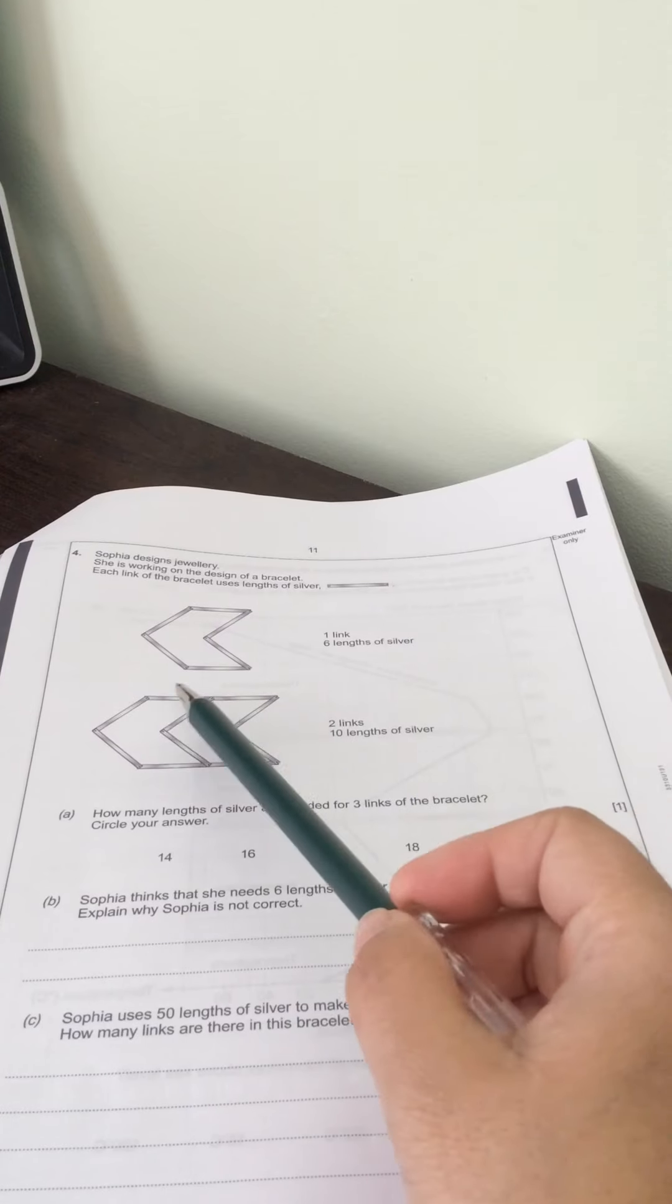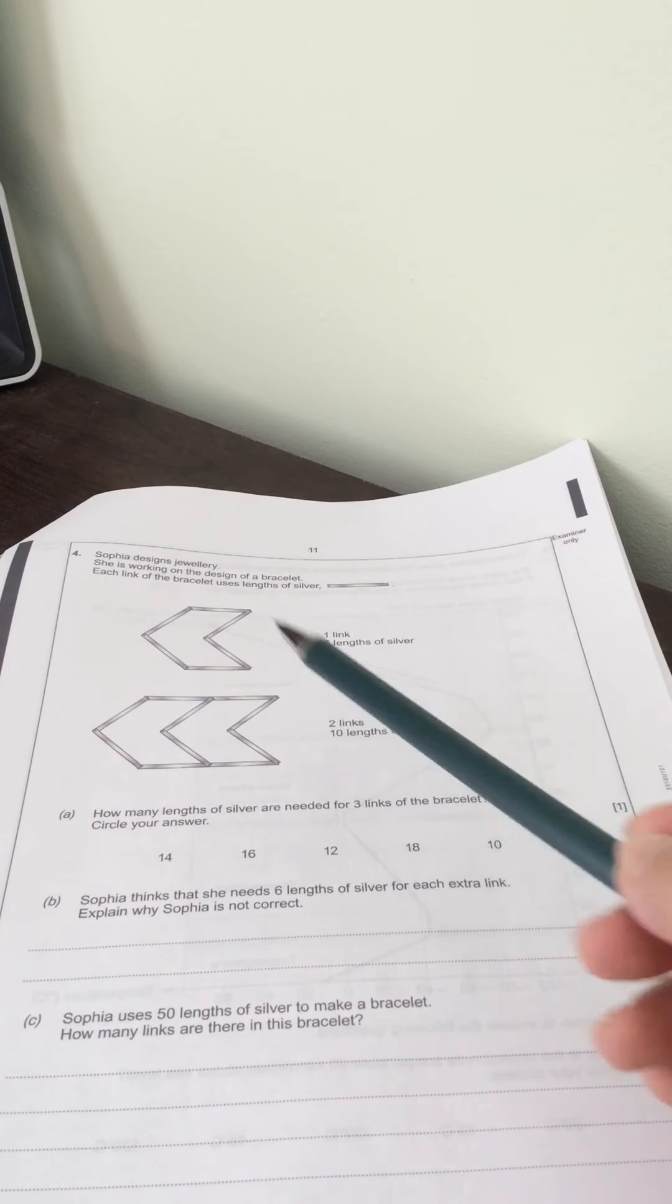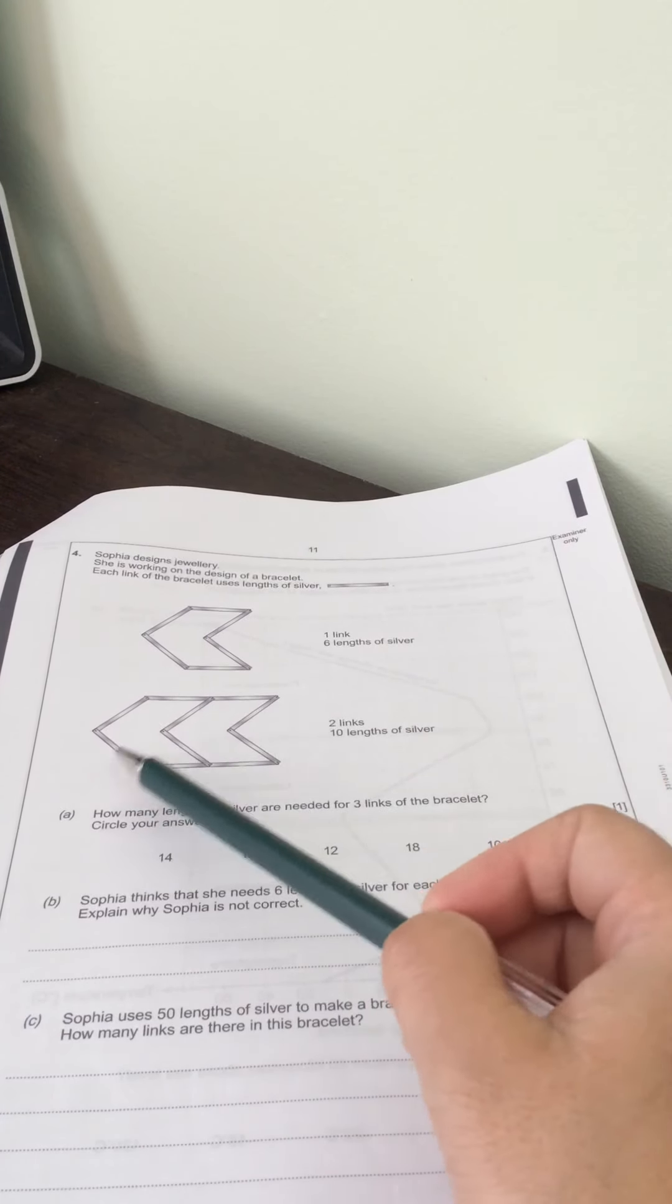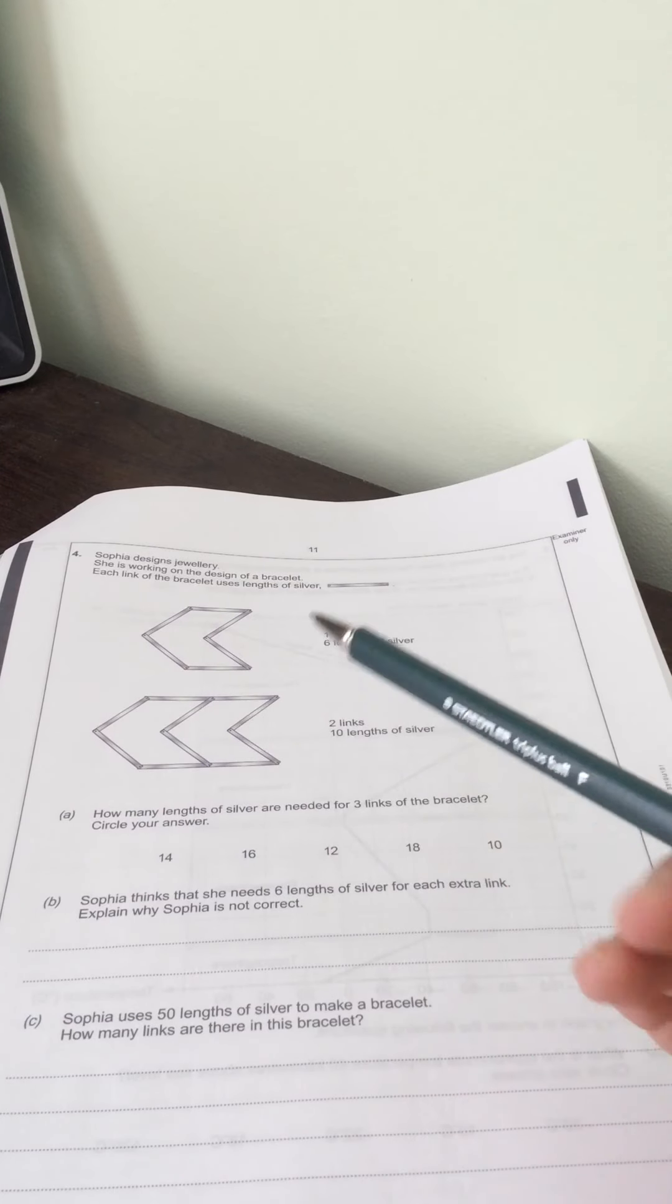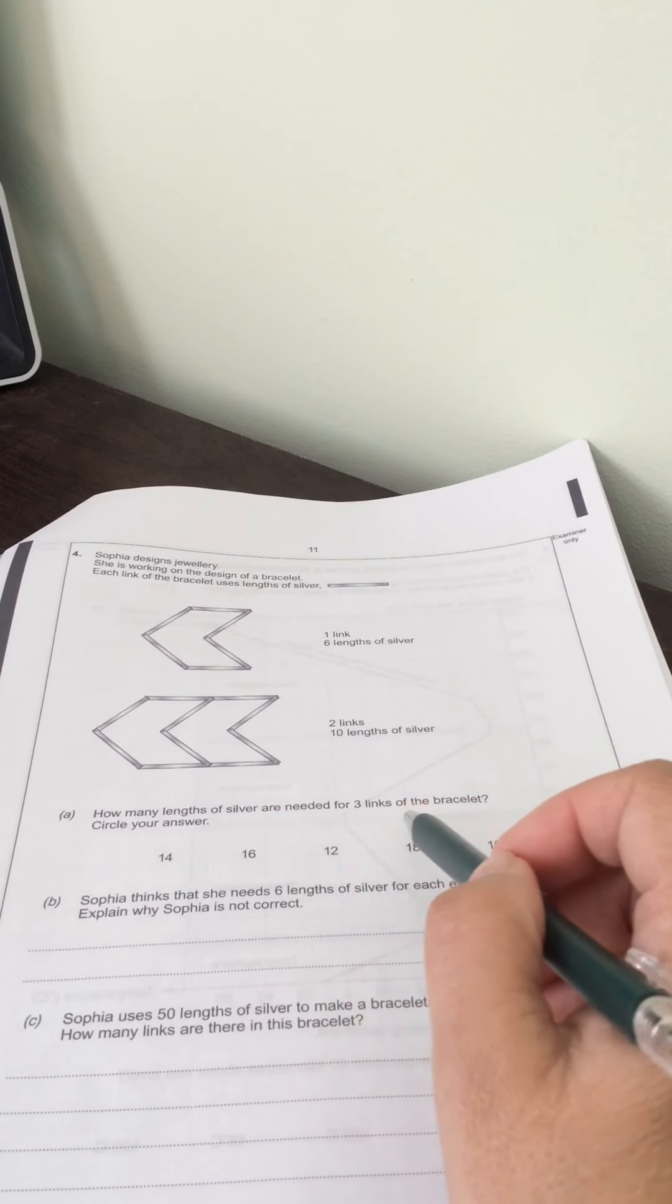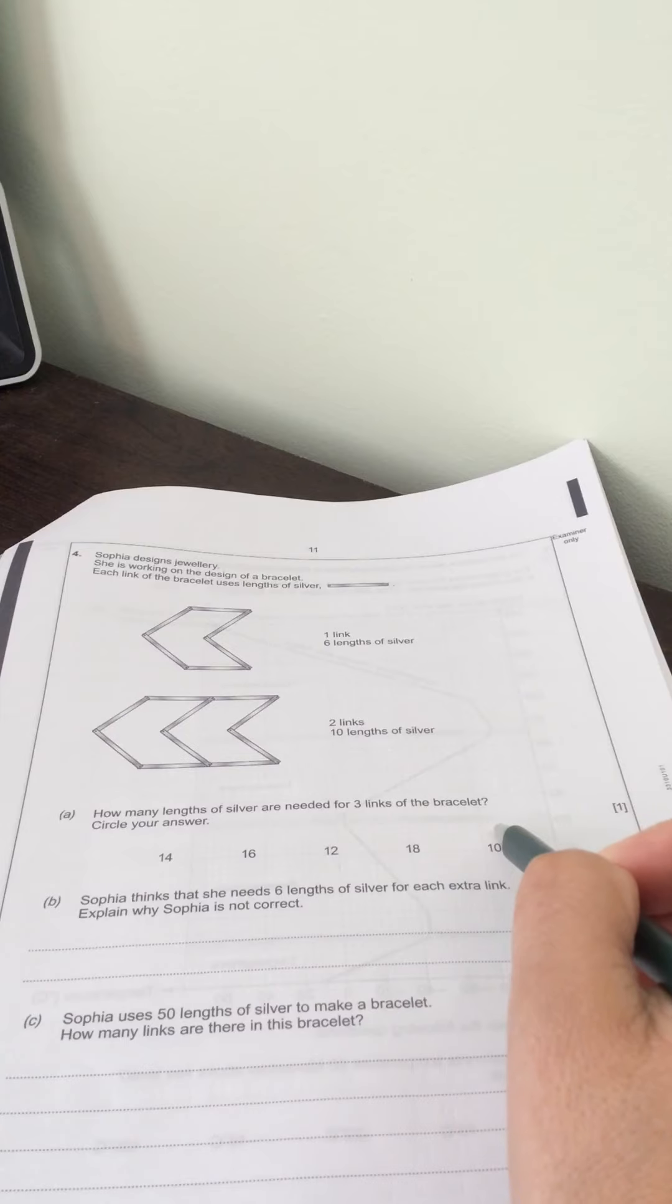And then for two links you're going to have ten lengths of silver. So one, two, three, four, five, six, seven, eight, nine, ten. How many lengths of silver are needed for three links of the bracelet?